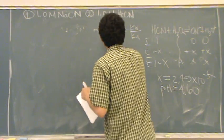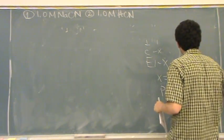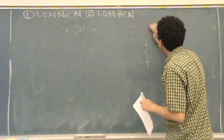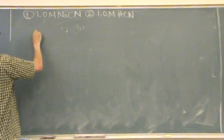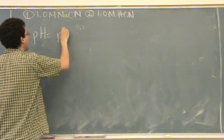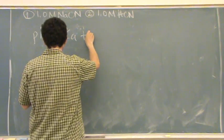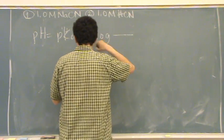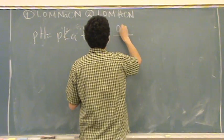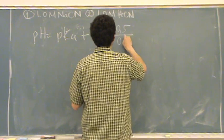Find the pH of the new solution when you mix 1 and 2. Now since it's a buffer, you don't have to use an ICE table, you can just use Henderson-Hasselbalch. pH equals pKa, we already have the pKa from the table, plus the log of the base over the acid, and it's 0.5 over 0.5.